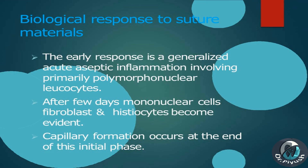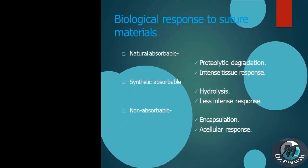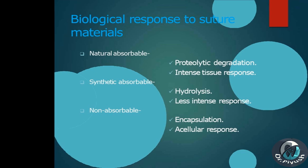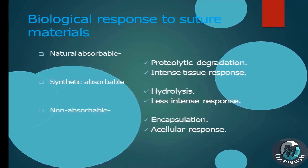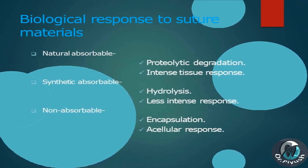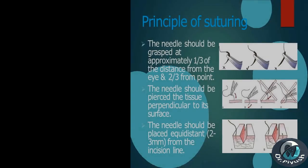Biological response to suture materials: the early response is a generalized acute aseptic inflammation involving primarily polymorphonuclear leukocytes. After a few days, mononuclear cells, fibroblasts, and histiocytes become evident. Capillary formation occurs at the end of this initial phase. Natural absorbable sutures cause proteolytic degradation with intense tissue response; synthetic absorbable sutures cause hydrolysis with less intense response; non-absorbable sutures cause encapsulation with an acellular response.